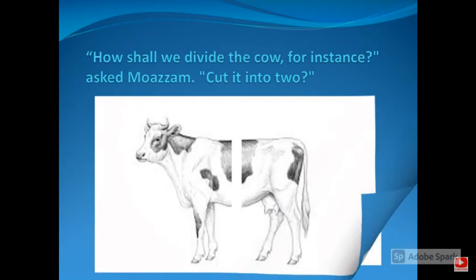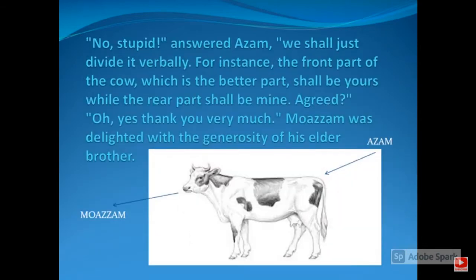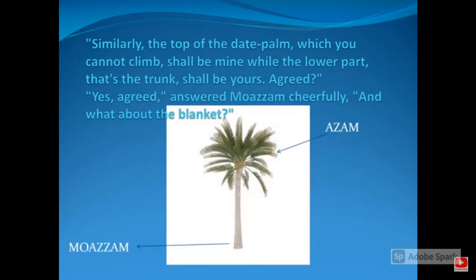Moazam asked how they shall divide the cow. Assam said they should divide it verbally — the front part of the cow, which is the better part, shall be yours, while the rear part shall be mine. Moazam agreed and was delighted with the generosity of his elder brother.